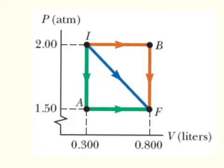Question number 8 says: 5 moles of gas, initially at a pressure of 2 atmospheres and a volume of 0.3 liters, has internal energy equal to 82 joules. In its final state, the gas is at a pressure of 1.5 atmospheres and a volume of 0.8 liters, and its internal energy equals 168 joules. Part A: for paths IAF, IBF, and IF in the figure above, calculate the work done on the gas.